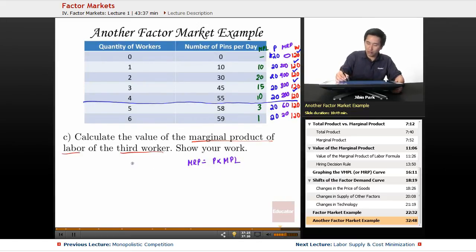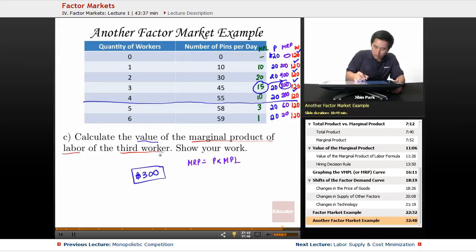I showed a lot of work, but the question asked for the value of the marginal product of the third worker. The MPL of the third worker is 15, so the value of the marginal product would be $300. I drew the entire graph—it doesn't hurt to do that—but all you really have to do is find the MPL, which is 15 times $20 equals $300.